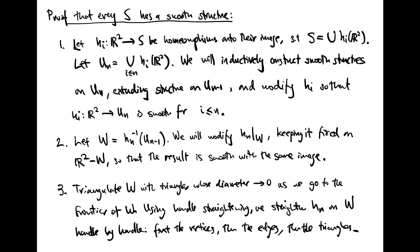So that H' agrees with H on this neighborhood U, and furthermore H and H' agree outside a compact set. And finally, H' is smooth on a neighborhood of D^i × 0. Let's prove that every surface S has a smooth structure using handle straightening. First of all, because S is a surface, it's paracompact, and every point has a neighborhood which is homeomorphic to R².